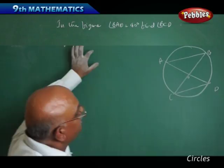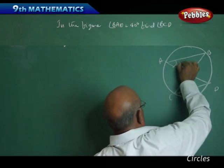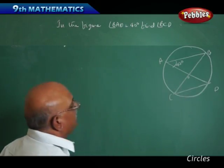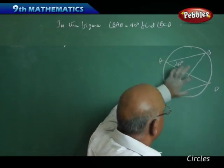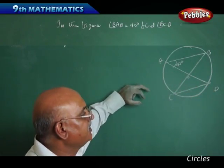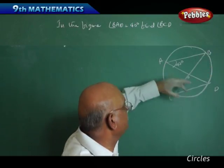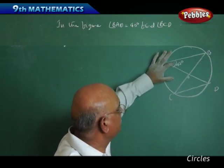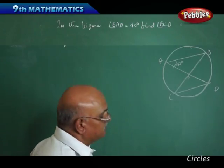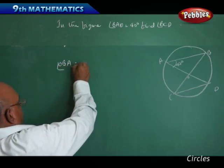The next question: angle BAD is equal to 40 degrees, as given. Our main interest is to find out angle BCD. Naturally, if angle BAD is 40 degrees, angle OBA is also going to be 40 degrees, because AB and CD are the two parallel lines and one transversal line is intersecting. Naturally, the sum of the interior angles — that is, the sum of opposite angles — is going to be the same. So angle OBA is also equal to 40 degrees.